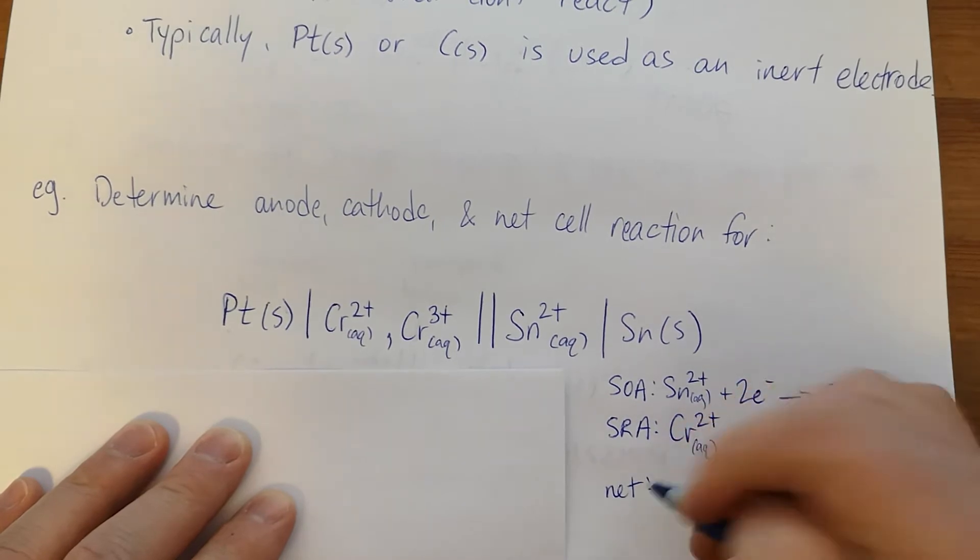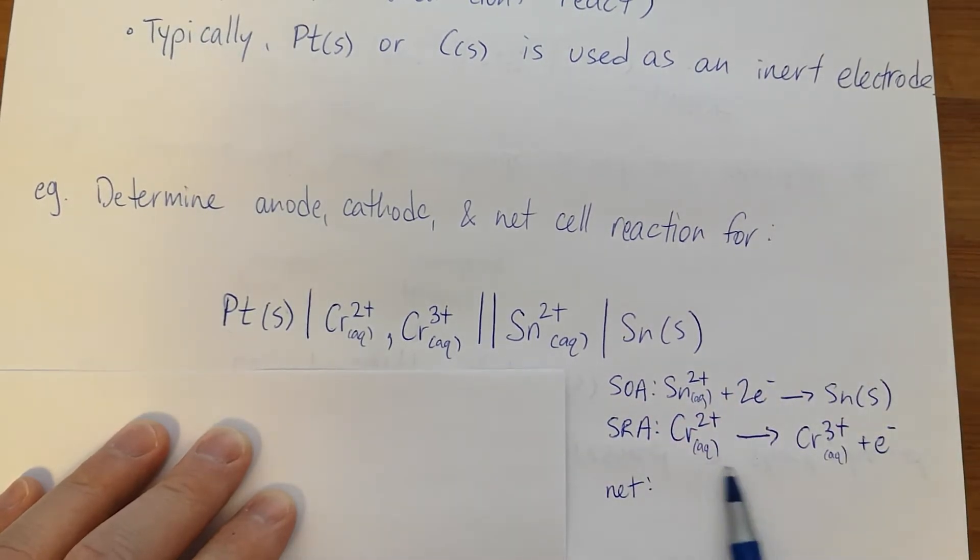To get our net, we just need two of these guys to balance the electrons. I'll do that quickly.